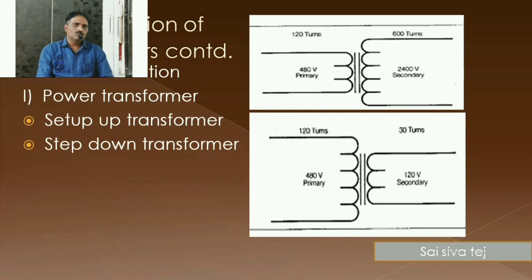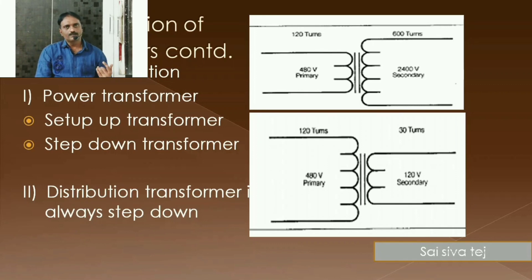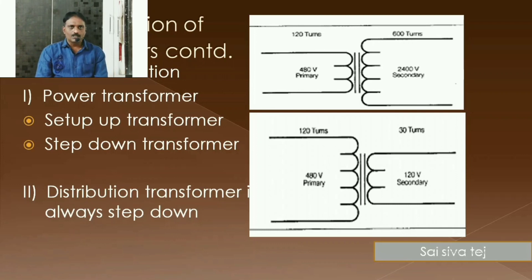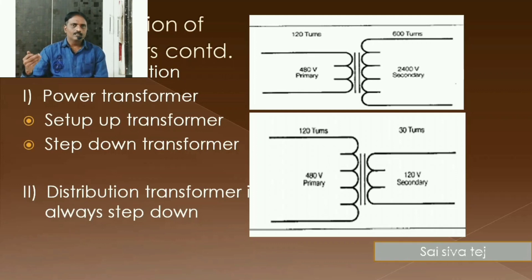Regarding step-up transformer and step-down transformer, we have seen this in the previous class. Step-up means these are the transformers which are going to increase the output voltage. Step-down means they are going to decrease the output voltage. The increase or decrease in voltage is done by the transformers depending upon the number of turns. In a step-up transformer, the output number of turns will be more than the input number of turns, hence the voltage will be increased. In the step-down transformer, the secondary turns will be less than the primary number of turns, hence the voltage will be stepped down.